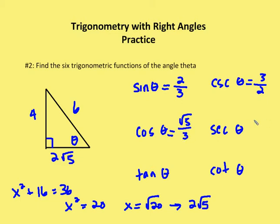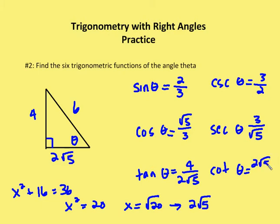Secant is the reciprocal of cosine: 3 over root 5. Now in the interest of time, we're not going to rationalize the denominator here, but you should fully rationalize the denominator as part of expressing this problem. Tangent is the opposite over the adjacent, which is 4 over 2 root 5. And cotangent is just the reciprocal of that: 2 root 5 over 4.